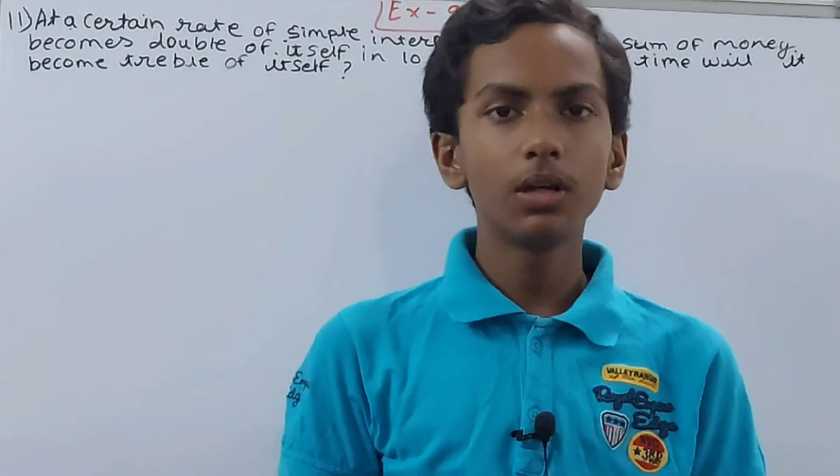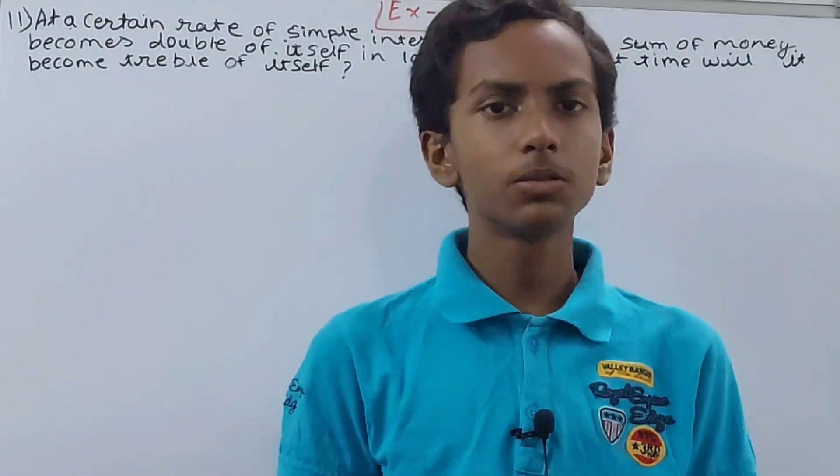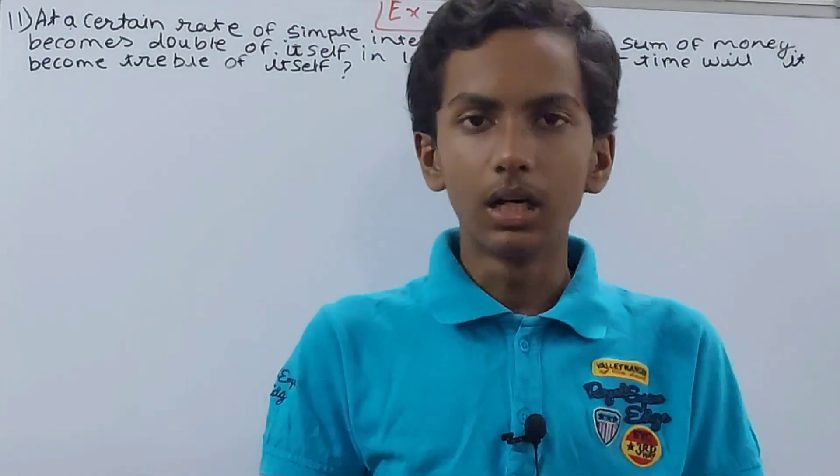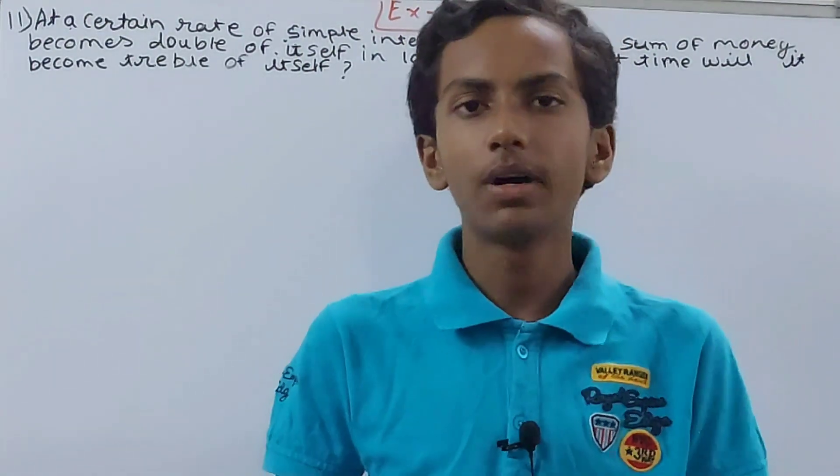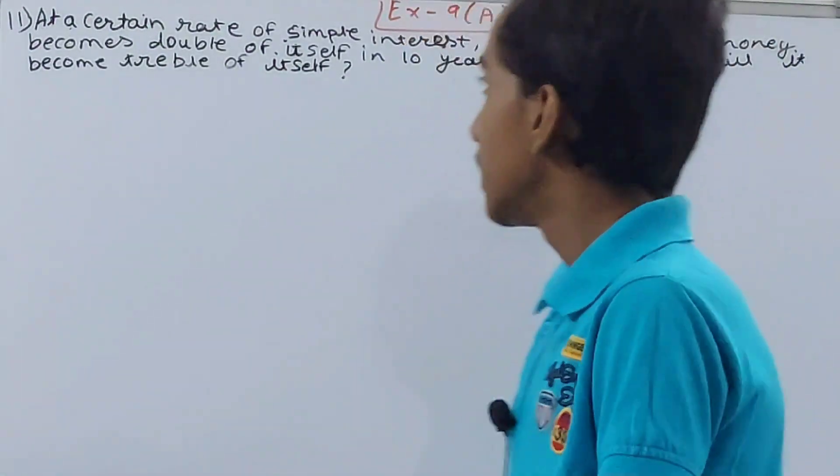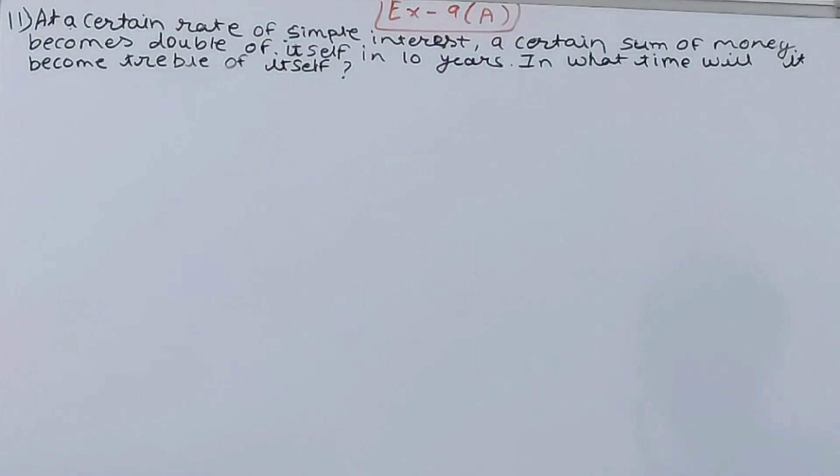Hello friends, welcome back to my YouTube channel Unlock Your Learning. In this video we are going to solve ICAC mathematics class 8, chapter 9, simple interest and compound interest, exercise 9a, question number 11. At a certain rate of simple interest, a certain sum of money becomes double of itself in 10 years. In what time will it become treble of itself?